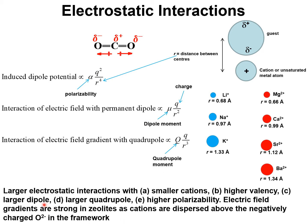A larger dipole, larger quadrupole, and higher polarizability will all lead to larger magnitudes of electrostatic potentials.